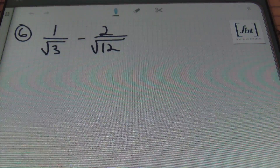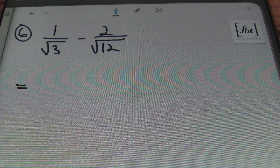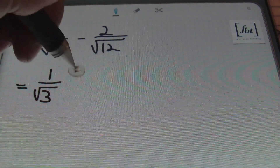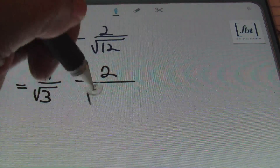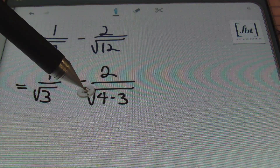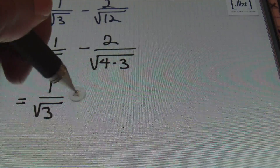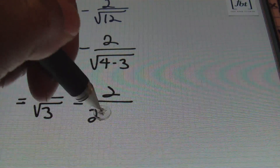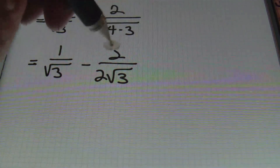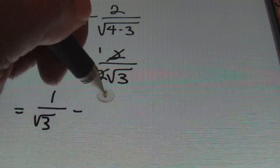Problem number 6: we have 1 over the square root of 3 minus 2 over the square root of 12. I'll start by getting a common denominator, simplifying the square root of 12 in the second fraction. The square root of 12 equals the square root of 4 times 3, since the largest perfect square within 12 is 4. That gives me 1 over the square root of 3 minus 2 over 2 times the square root of 3.